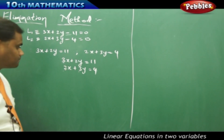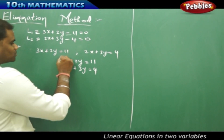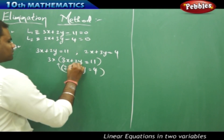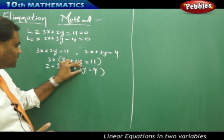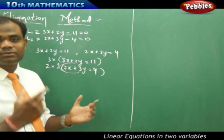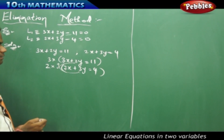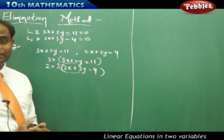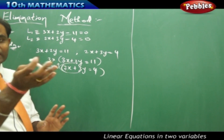The choice of which variable to target is with the student. I'll make the coefficients of y equal. To do this, I multiply the first equation by 3 and the second equation by 2. This way we get a common coefficient for y in both equations. Similarly, if targeting x, I would multiply the second equation by 3 and the first by 2. Here I multiply 3 to equation 1 and 2 to equation 2 simultaneously.